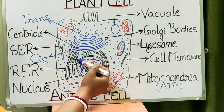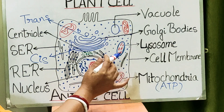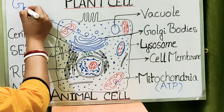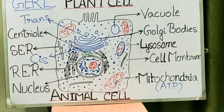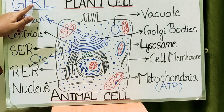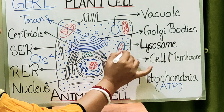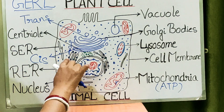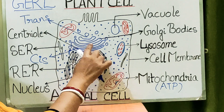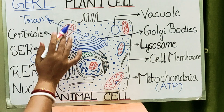The endoplasmic reticulum, Golgi bodies, and lysosomes together form a complex called the GERL complex — G stands for Golgi bodies, ER stands for endoplasmic reticulum, and L stands for lysosomes. These three are always found near each other so that processing can happen simultaneously: the endoplasmic reticulum produces proteins and lipids, Golgi bodies process them, and lysosomes are formed from the processed products containing hydrolytic enzymes.